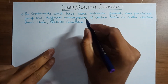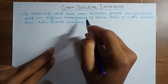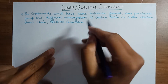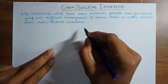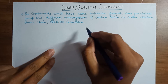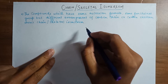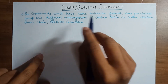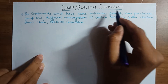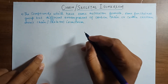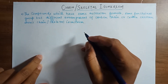Hello friends. In this video we will learn about chain or skeletal isomerism. In the previous video we have learnt isomerism, isomers, structural isomerism and stereoisomerism. Chain or skeletal isomerism comes under the classification of structural isomerism.